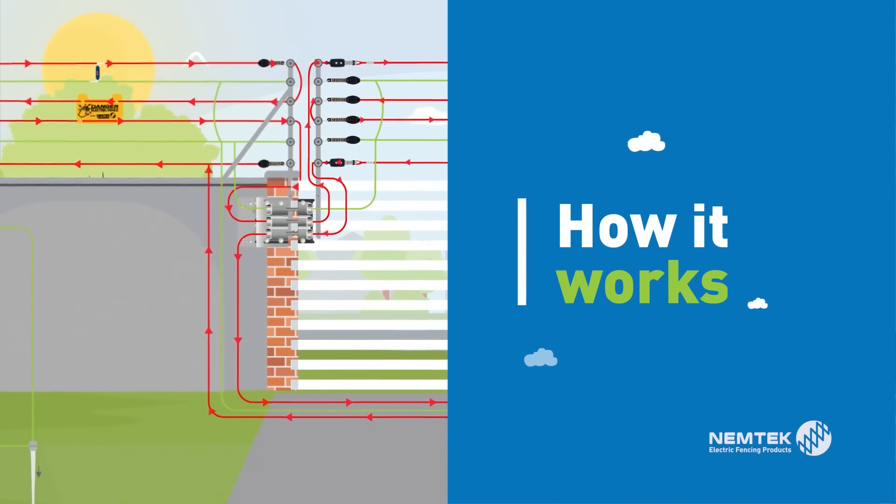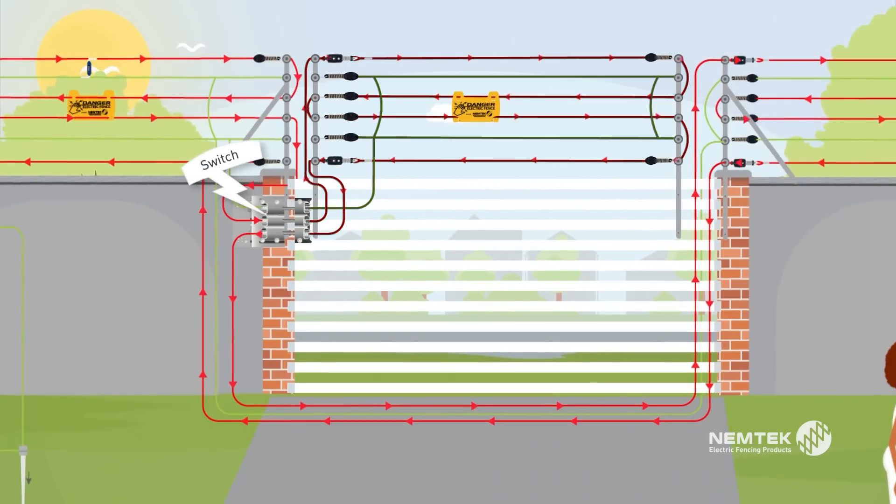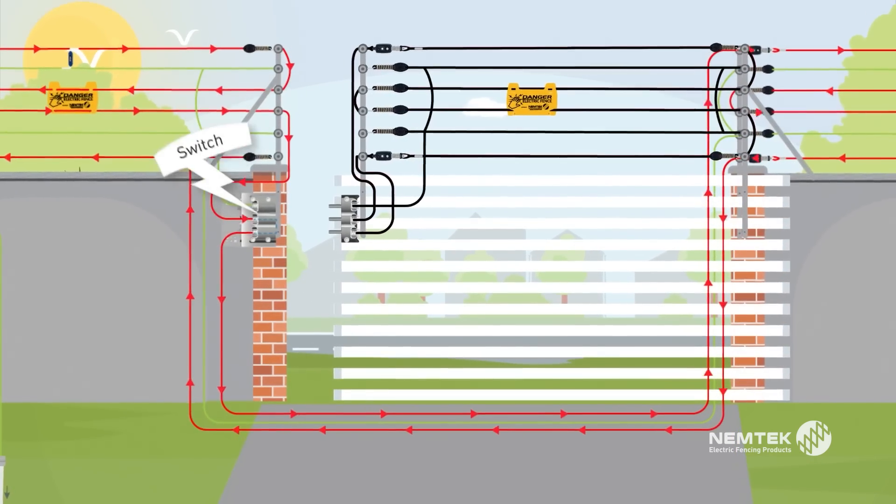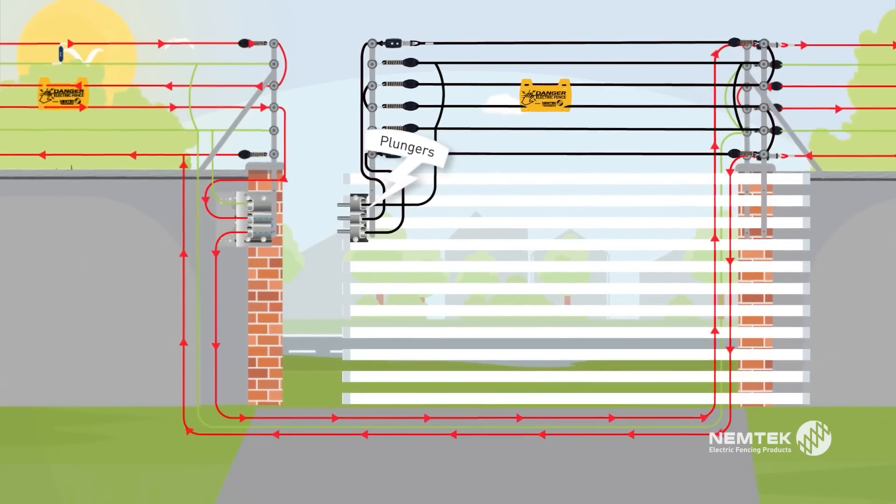How it works? The switch side of the gate contact is mounted onto the fixed, non-moving side of the gate. The plunger side is mounted onto the moving gate.